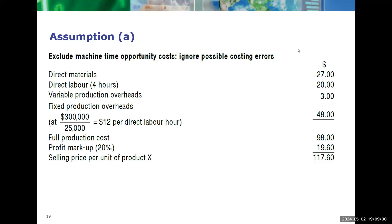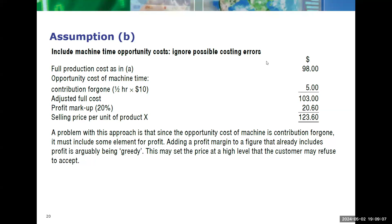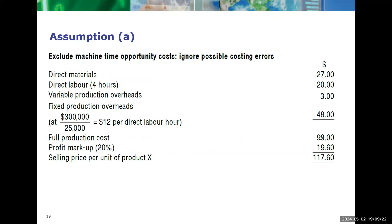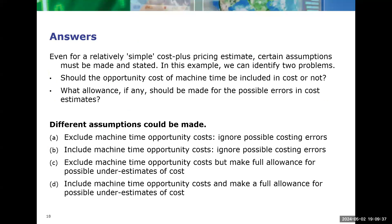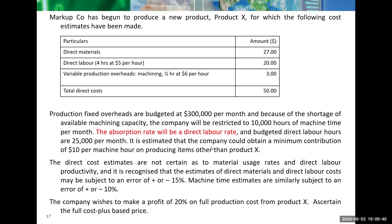We are going to increase the items for each of the next assumptions. The next assumption is option two: we include a machine time opportunity cost but we are ignoring the possible costing errors. So what we are doing here is taking the full cost as per the previous assumption — the fixed and variable cost full cost per unit — and to that we add the opportunity cost. We are told that machine time is limited, and if you don't do Product X but did something else, you are able to earn $10 per machine hour.